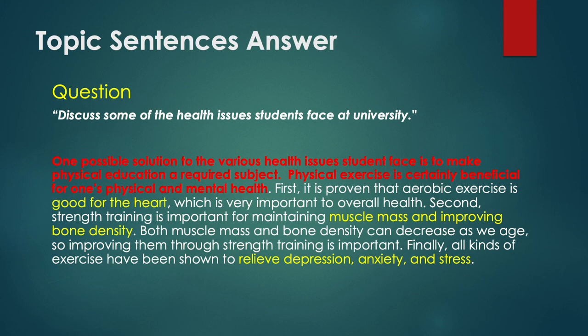Here's an answer. 'One possible solution to the various health issues students face is to make physical education a required subject. Physical exercise is certainly beneficial for one's physical and mental health.' This has two sentences and notice it mentions both physical and mental benefits. That's an example of an effective topic sentence for this paragraph.